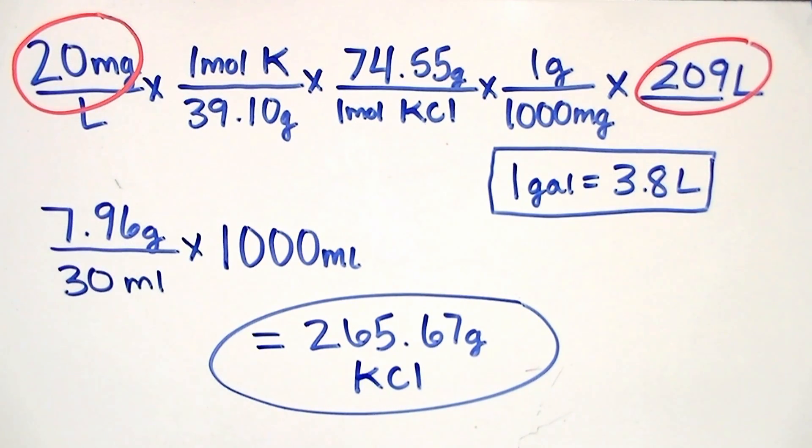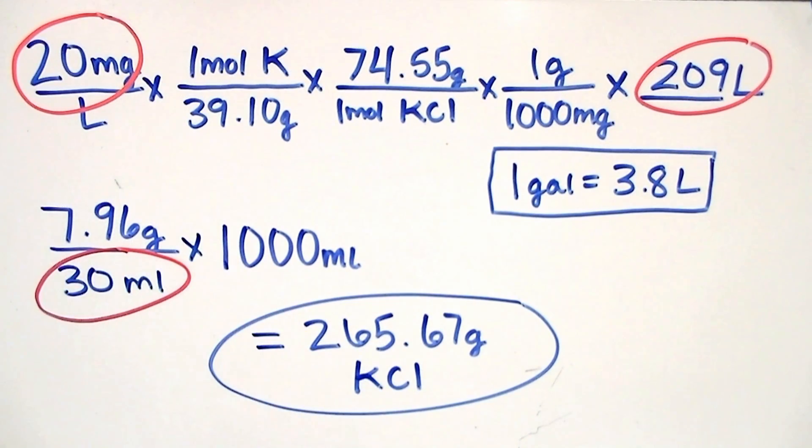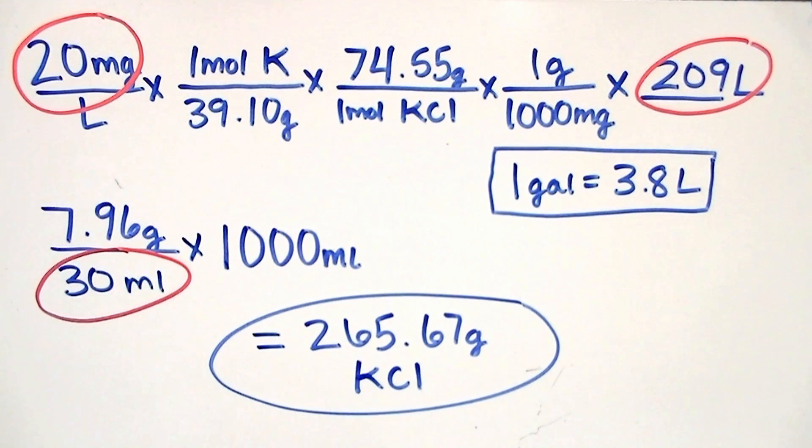We can also change the volume of each dose. We picked 30 mils because we're using a 50 mil syringe and because this volume enabled us to stay underneath the solubility max for potassium chloride. If we were to go over this solubility max we wouldn't be able to dissolve all of our potassium chloride into solution thus reducing the concentration of each dose.